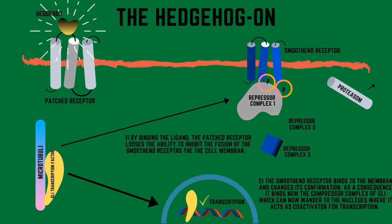When this pathway is activated by the hedgehog ligand, the patched receptor loses the ability to inhibit the fusion of the smoothened receptor to the cell membrane. As a consequence, the smoothened receptor binds to the membrane and changes its conformation, and this leads to the binding of the repressor complex. As a consequence, the transcription factor is no longer divided into two parts and goes into the nucleus where it acts as a co-activator for transcription. So here are some cellular responses activated.